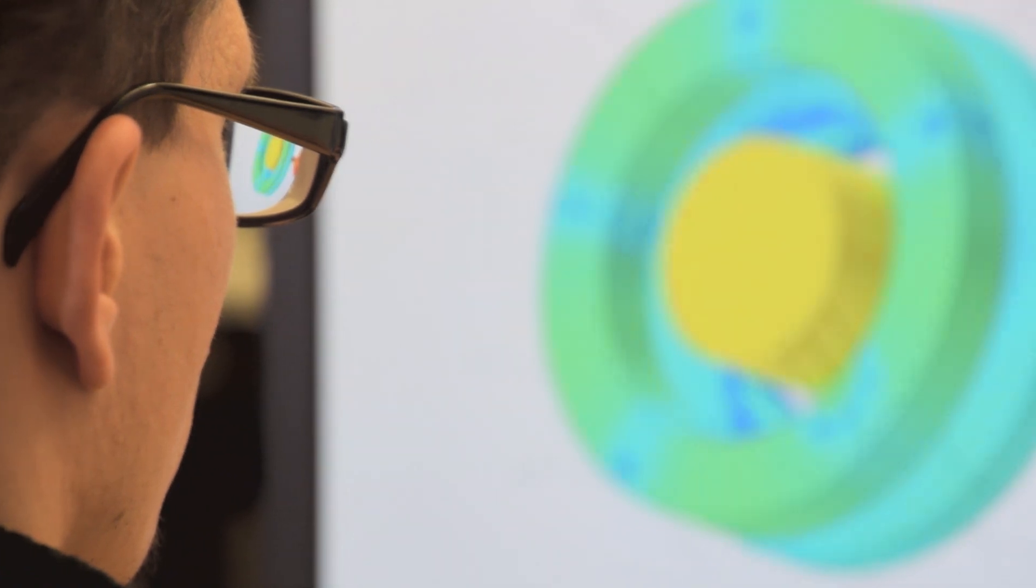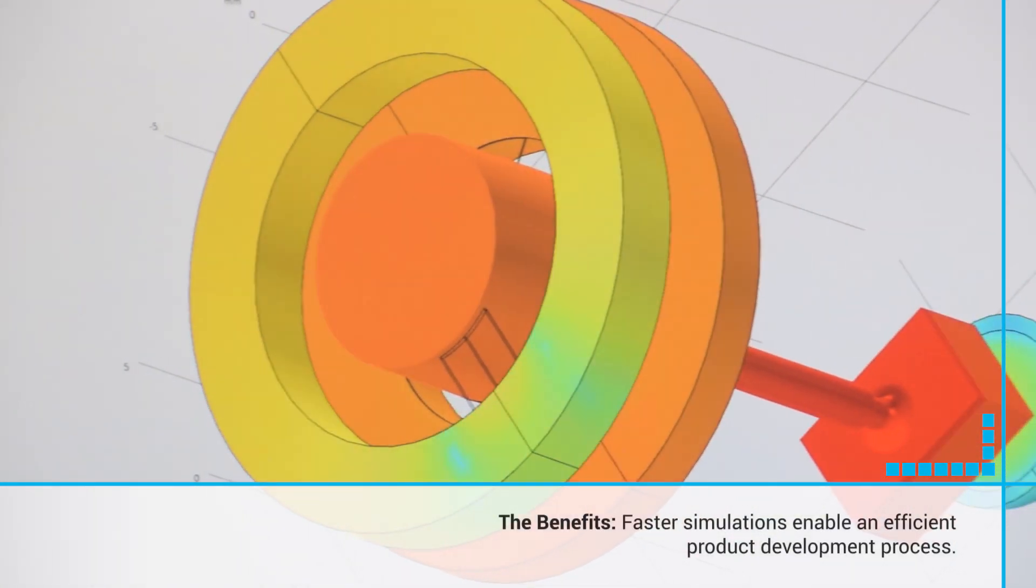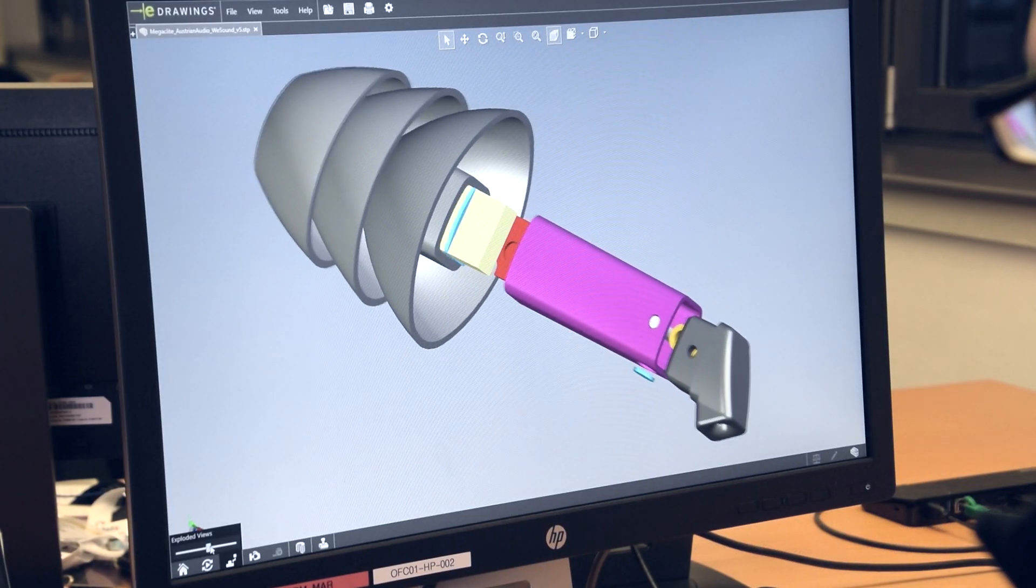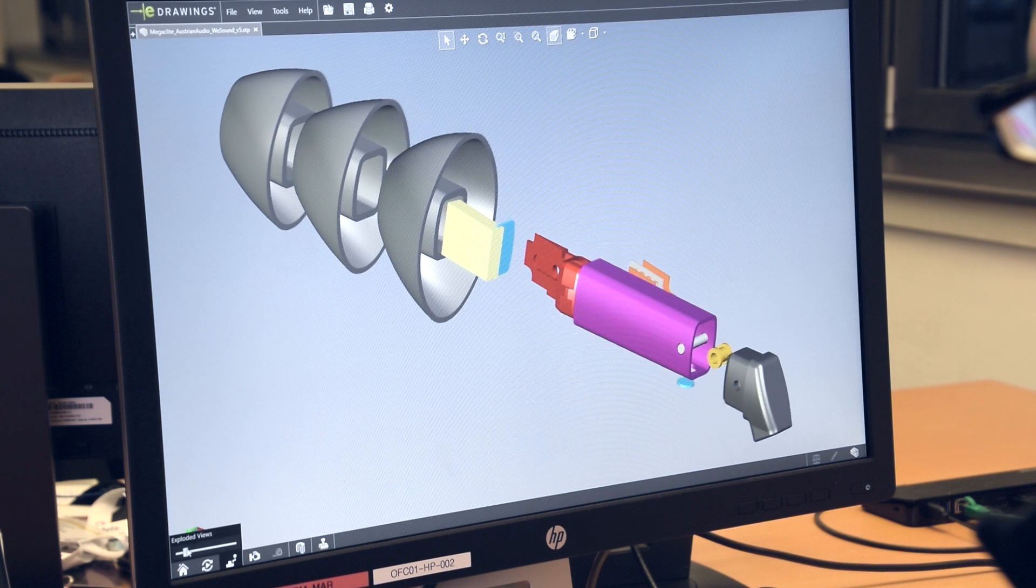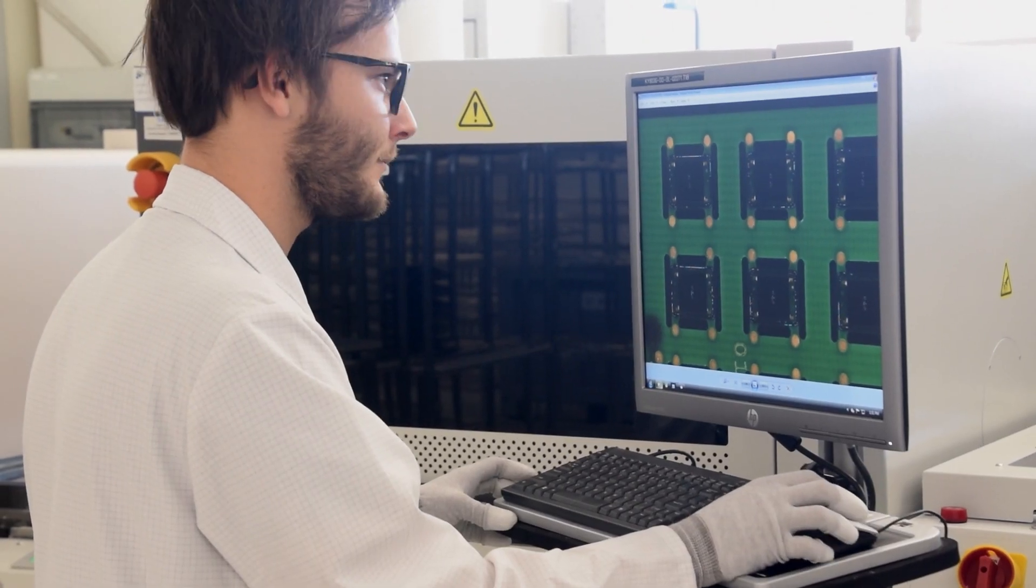The use of HPC resources enabled USound to use highly detailed models to get reliable results. Using exact models, 400,000 euros can be saved by skipping two of the usually four design runs required until final production design is achieved.